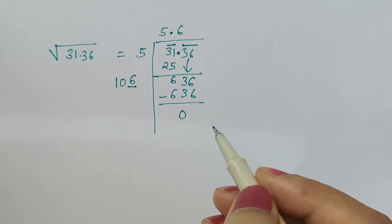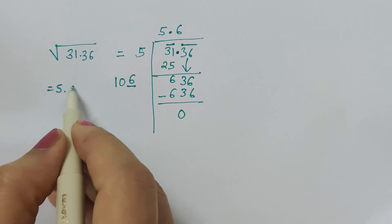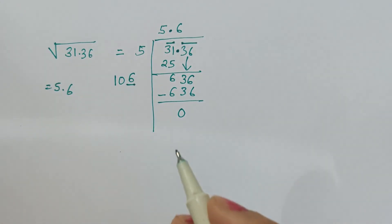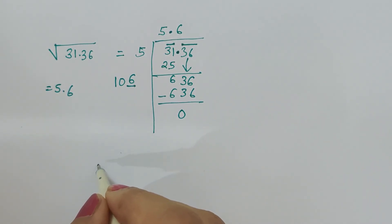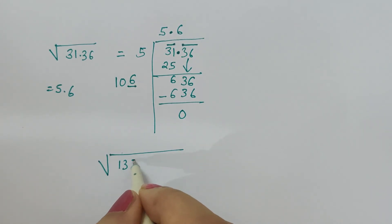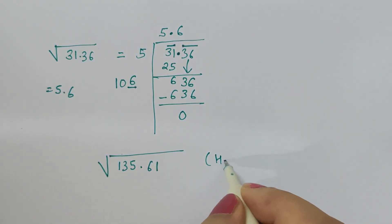6 ones are 6, and when we subtract it, it gives you 0. The square root of 31.36 is 5.6. So likewise, we have several examples and I request you do the square root of 135.61 by yourself.